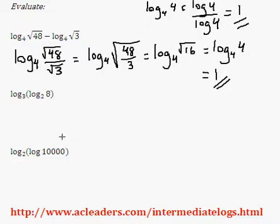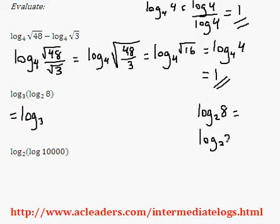Okay, how about this one? First I'm going to start with the inside here. I want to figure out what log base 2 of 8 is. If I can't figure that out immediately, I can do this: log base 2 of 8, 8 is 2 to the 3, 2 cubed. Now I can actually bring the exponent down, make it 3 log base 2 of 2, which is 1, so that's just equal to 3.